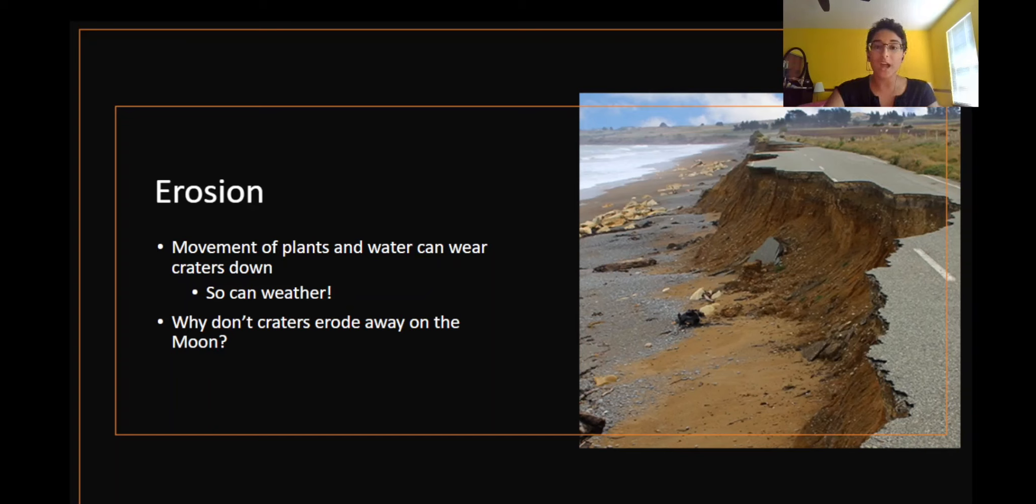But why don't craters erode away on the moon just like they do on Earth? Well, this is because the moon has no weather, no plants, and no liquid water. Erosion can't happen on the moon because nothing that causes erosion exists there.